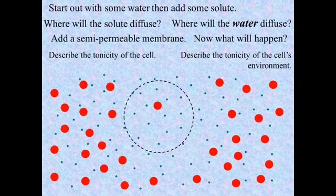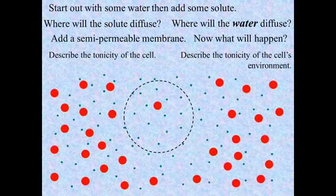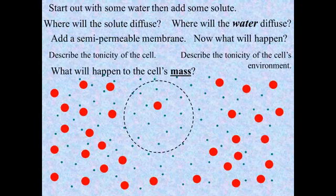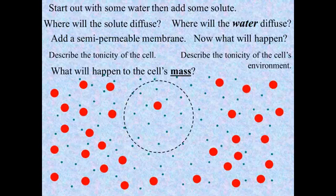The cell's environment is hypertonic compared to the cell itself. So if we think about the mass of this cell — it's going to lose water because water is going to leave the cell and go to the outside environment. If water leaves the cell, then the mass is going to decrease. The reason, of course, is that the cell is going to lose a great deal of water in this hypertonic environment.